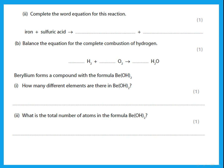Complete the word equation for this reaction: iron plus sulfuric acid. Iron plus sulfuric acid gives iron sulfate plus hydrogen. If you don't remember this from last year, we will be doing this again in the chapter on acids and bases.